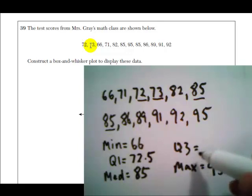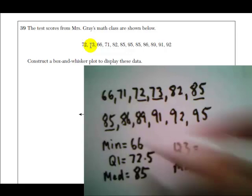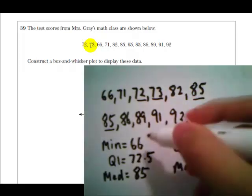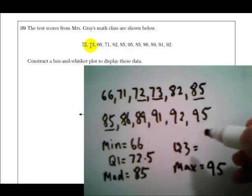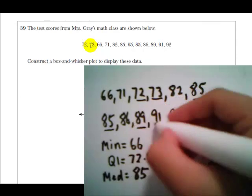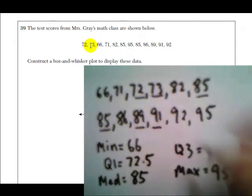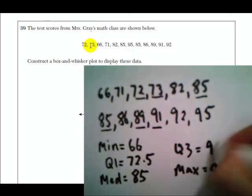Now, the third quartile, similar to the first quartile, is the median of the top half of numbers. So looking at the numbers 85 through 95, what's the number in the middle? The two numbers close to the middle are 89 and 91. So as the third quartile, we can take the average of those two, which is 90.